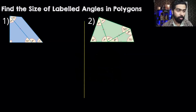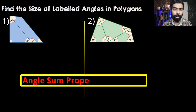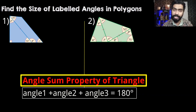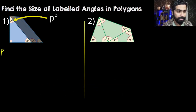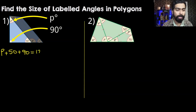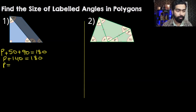In question 1 we have to find angle P, angle Q, and angle R. We can find angle P straight away by using the angle sum property of triangles, where three angles add up to 180 degrees. So we have angle P plus 50 degrees plus this right angle, which is 90 degrees, adds up to 180 degrees. Now 50 plus 90 gives us 140, so P plus 140 is 180. Subtracting 140 from both sides, P is equal to 40 degrees.